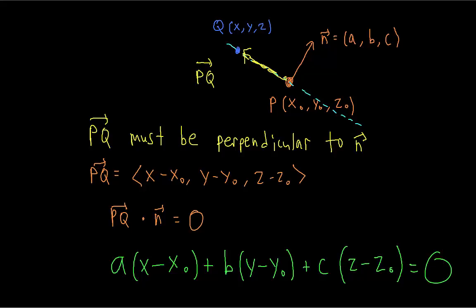With this form, given any initial point and a normal vector, you can quickly construct an equation for the plane. Conversely, if you are given an equation of a plane, you can quickly find which vector is perpendicular to the plane just by looking at a, b, and c, which are the coefficients of x, y, and z. Sometimes you'll see the equation multiplied out as ax + by + cz plus constants, since x₀, y₀, and z₀ are constants that can be combined.